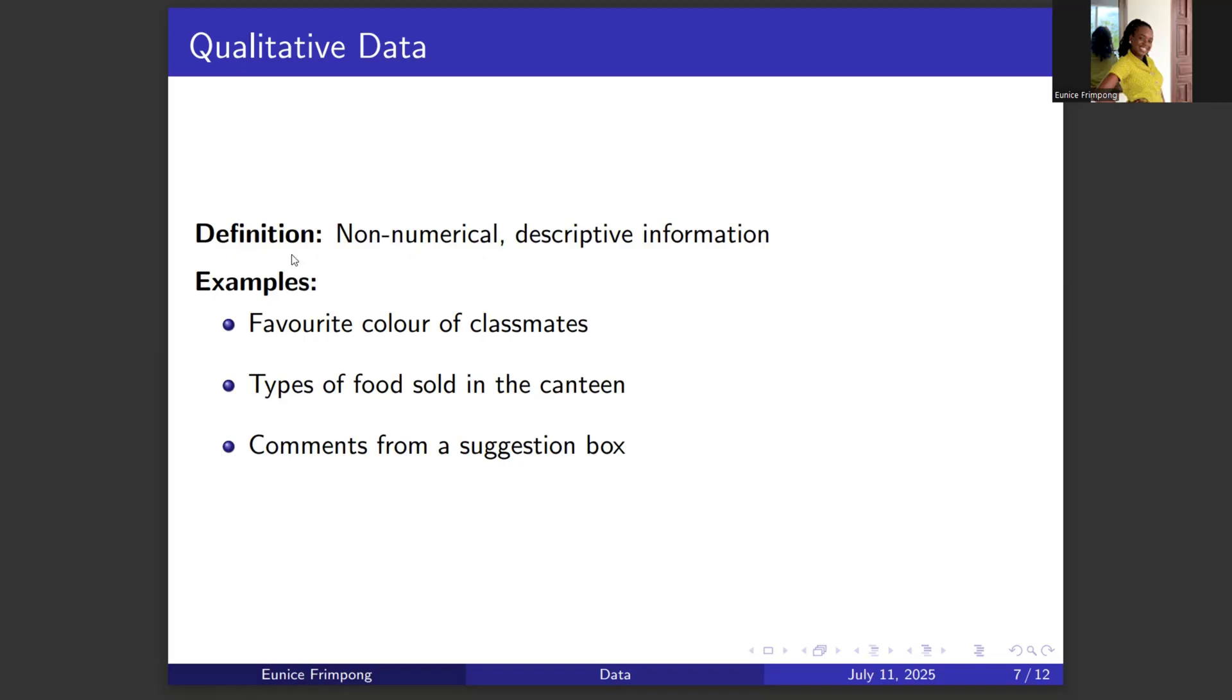Let's look at qualitative data. We define them as non-numerical data and descriptive information. So instead of using numbers to represent the data, we use a description, a kind of information that describes the data. Examples include favorite color of classmates, types of food sold in the canteen, and comments from a suggestion box. You can see that we're not using numbers to describe or represent the data, but we are using a description for the data.